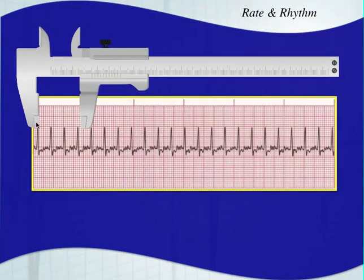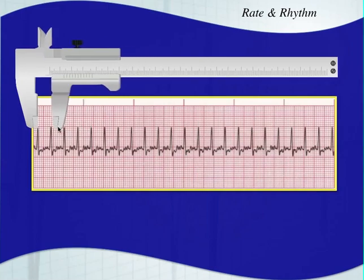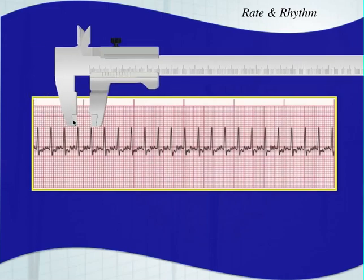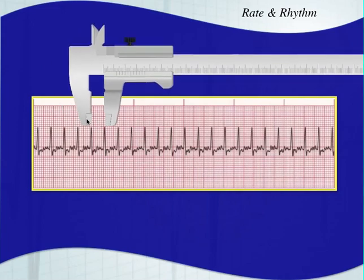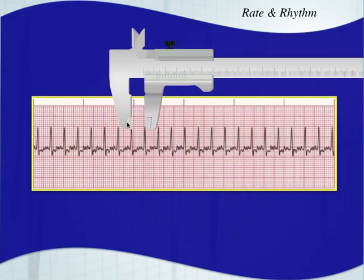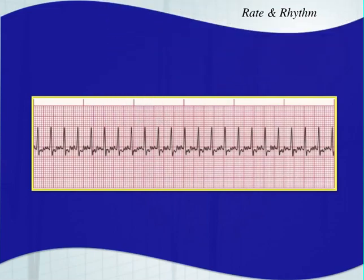A couple more — let's see if this one is regular. With fast rhythms you always want to measure to confirm regularity. Another trick: if the numeric heart rate on the monitor stays the same, it's probably regular; if it changes, it's probably irregular. This one's very regular. Between those QRS complexes there isn't quite two large boxes but definitely more than one, so it's between 150 and 300 beats per minute — probably around 200 beats per minute. That's a pretty fast rhythm.